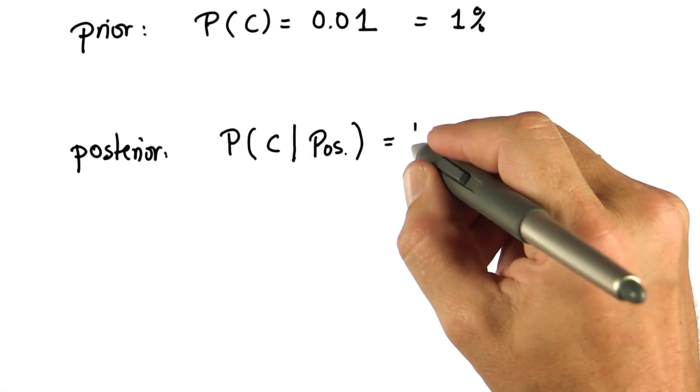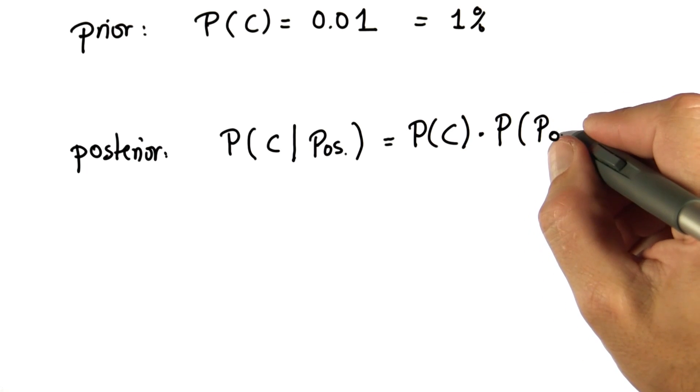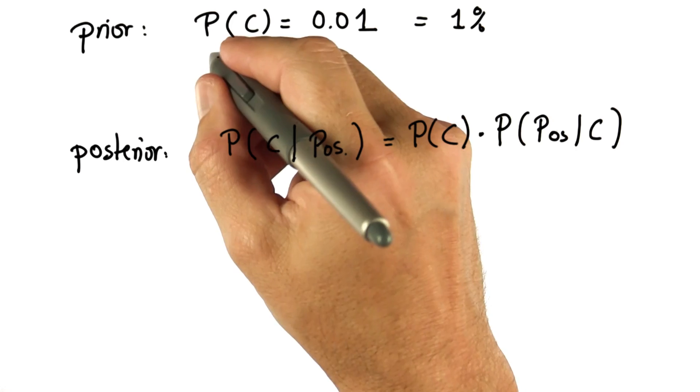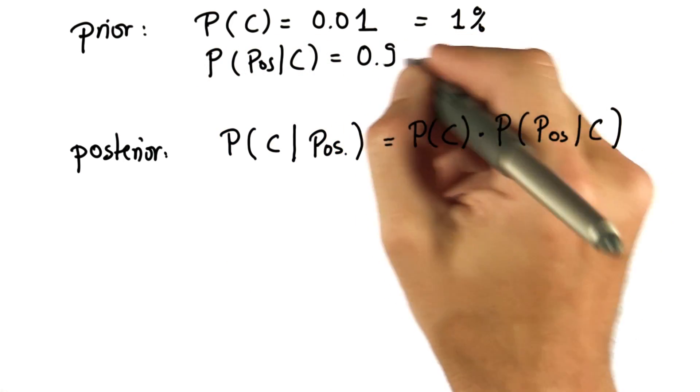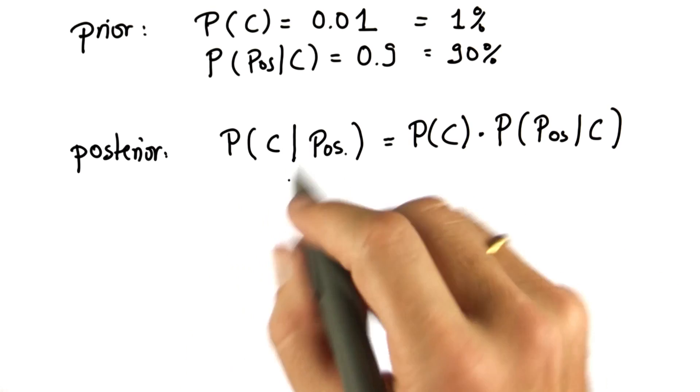is the product of the prior times our test sensitivity, which is what is the chance of a positive result given that I have cancer. And you might remember this was 0.9 or 90%. Now just to warn you, this isn't quite correct.